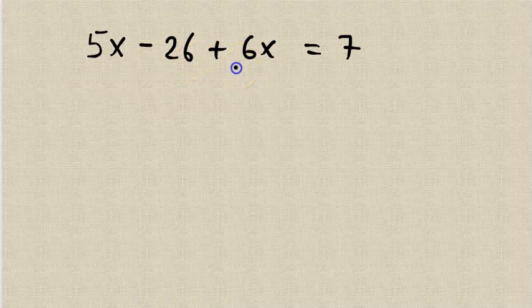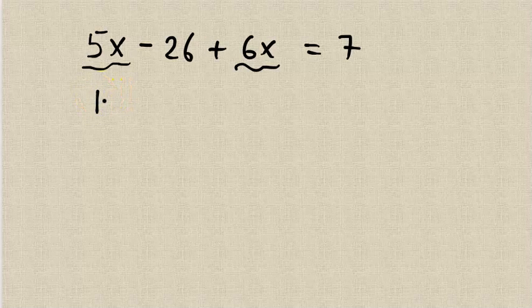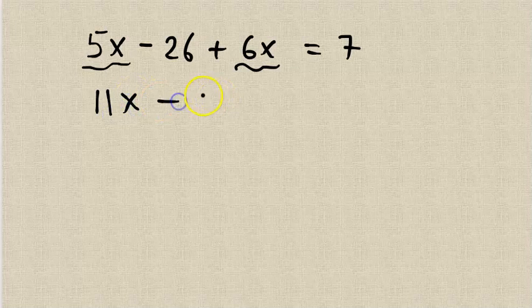What I have is 5x minus 26 plus 6x equals 7. Now collect like terms together. We have 6x here and 5x here, both of them are positive, so you add them. That is 5 plus 6 is 11x minus 26 equals 7.